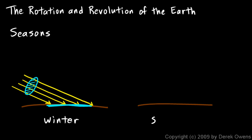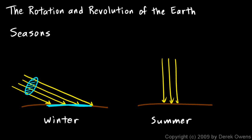In the summer, the sun is higher in the sky — let's imagine it's straight overhead, so the rays of sunlight are coming straight down. Now the light coming through a given circle of area is spread out over a smaller area; it's not spread out as much. So the sunlight is more concentrated — there's more energy per square meter striking the earth's surface. The surface heats up more in the summer because the direct striking of the sun's rays causes more energy per unit area.